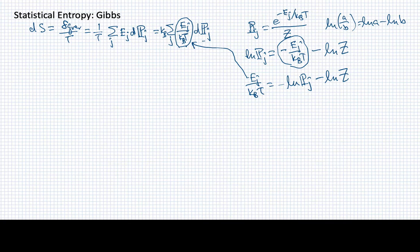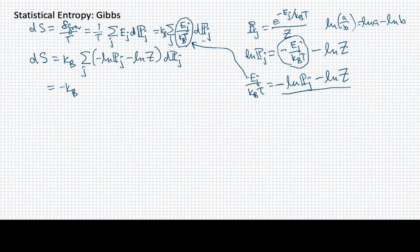So let's do that. I have incremental change in entropy is equal to kb times the sum over j, and now I'm going to substitute this expression in, don't forget that minus sign, substitute this expression in for this ratio. So I'll have negative log of pj minus log of the partition function times dpj. I've got a bunch of minus signs here, why don't I just pull them out front. So I'll have minus kb, and then I want to analyze what these things are, so I'm going to separate this into two sums.